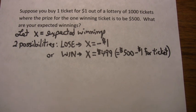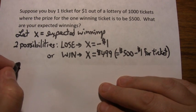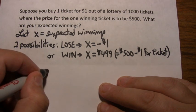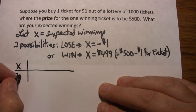So from that, I can set up the PDF. The PDF gives me the values of X, the possible values of X, and the probability that they occur.